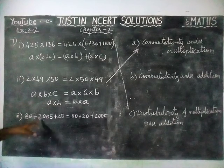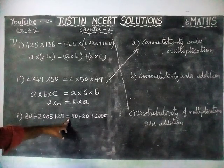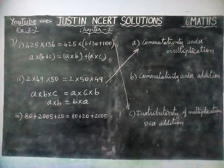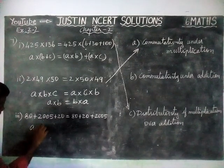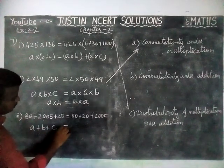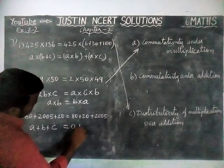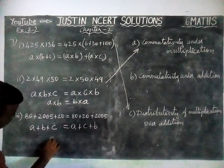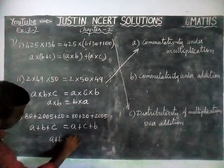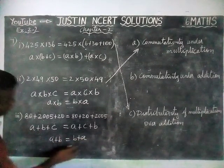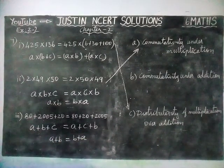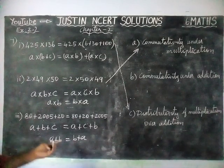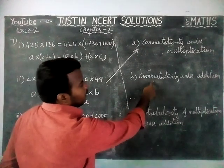Next, third question: 80 plus 2005 plus 20 is equal to 80 plus 20 plus 2005. Here they changed the order — same model. A plus B plus C is equal to A plus C plus B. This is also in the form of A plus B is equal to B plus A. If we change the order also, the value will not change. So this is commutativity under addition.